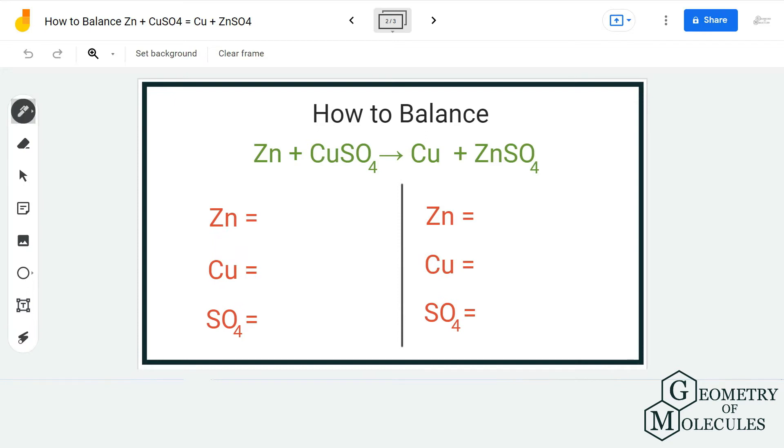To start with it, I'm going to count the number of atoms on the reactant side. First we have one zinc atom, and I'm going to consider SO4 as it is because it is the same on both reactant and product side. We have the same group, so I have one sulfate group on the reactant side and one copper atom on the reactant side.